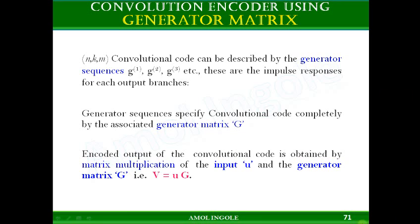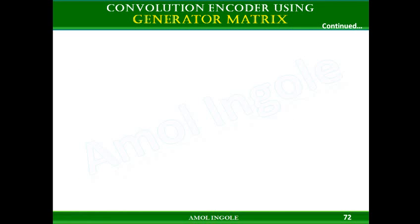That is, V is equal to U times G. This is similar to the linear block code (LBC) where we obtain the linear block code by multiplying the message block with the generator matrix. Let us see how this generator matrix can be obtained.